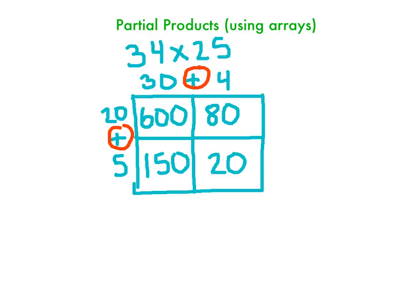Okay, so I've got all these products, or partial products. It's part of the original problem. Remember, our original problem is up here, 34 times 25. So all these boxes are partial products. They're part of the problem that we're trying to figure out.